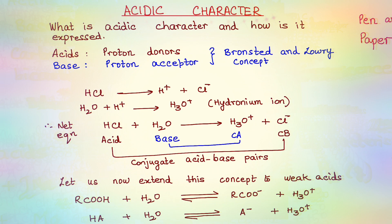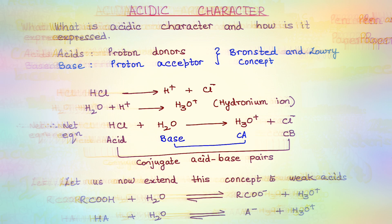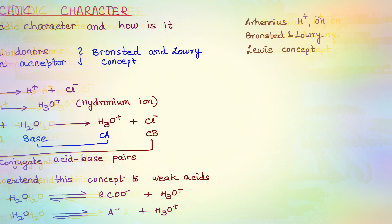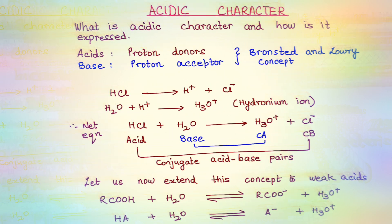There are various theories to explain acidic character, the prominent ones being the Arrhenius theory, Bronsted and Lowry concept, and of course the Lewis concept. Arrhenius concept was to do with H+ and OH- ions. Bronsted and Lowry concept, what we are going to discuss now, mainly talks about proton donors and proton acceptors. On the other hand, Lewis concept is more to do with electron acceptors and donors.